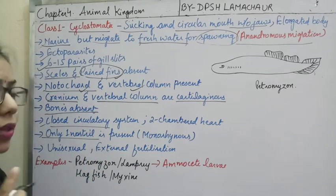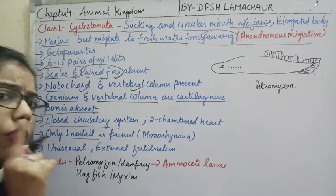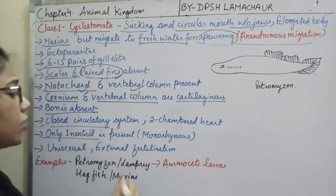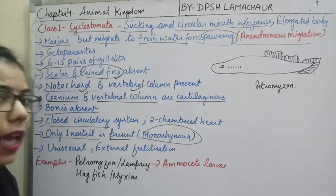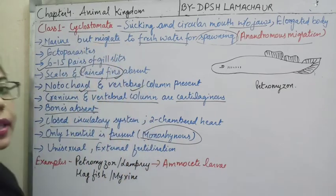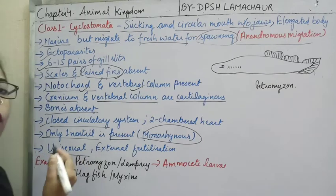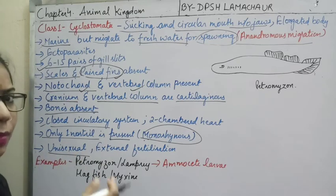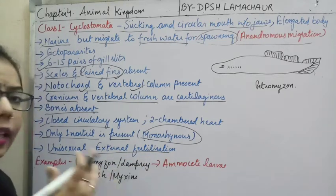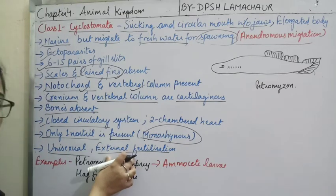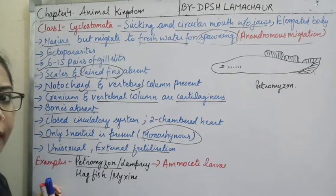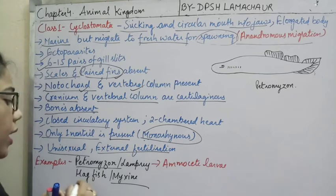Only one nostril is present in Cyclostomata — this condition is known as monorhinous. When two nostrils are present, the condition is dirhinus. Cyclostomata shows monorhinous condition. Regarding reproduction: they are unisexual — only one sex per animal, either male or female. Fertilization is external; both release their gametes in water where fertilization takes place. Examples: Petromyzon, also known as lamprey, and Myxine, also known as hagfish.